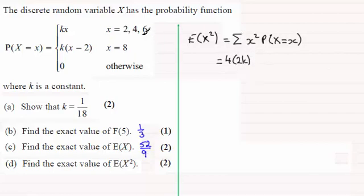And when X is 4, 4 squared is going to be 16 times its probability when X is 4, which is 4k. And when X is 6, we've got 6 squared, 36 times 6k.